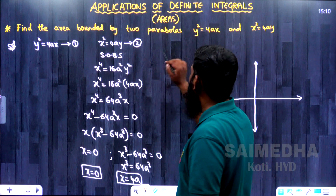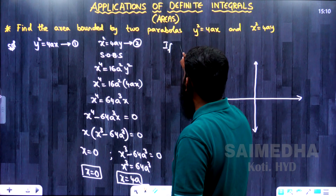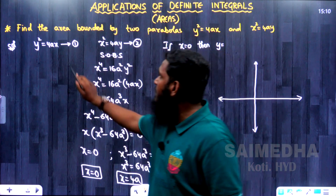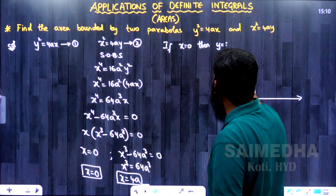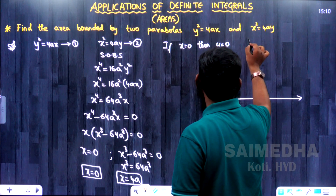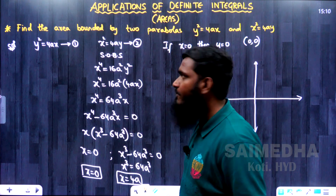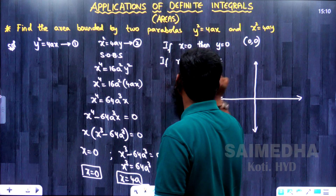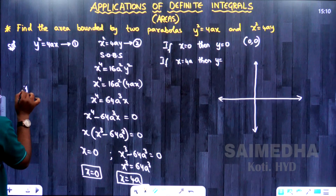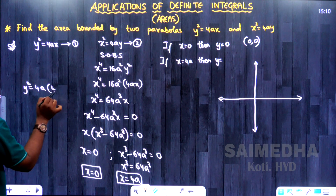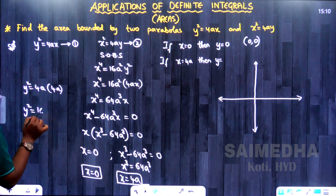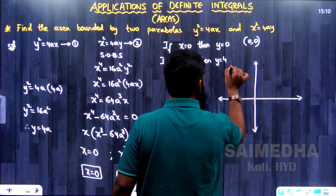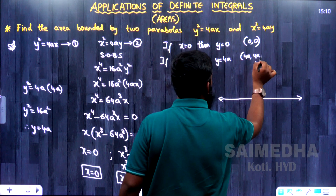Now let us find the corresponding y-values. When x = 0, substituting into equation 1 gives y = 0, so the first intersection point is (0, 0). When x = 4a, substituting into y² = 4ax gives y² = 4a · 4a = 16a², so y = 4a. The second intersection point is (4a, 4a).